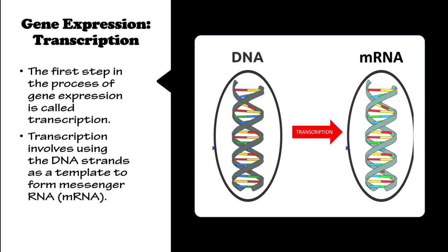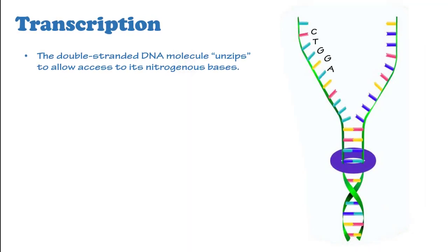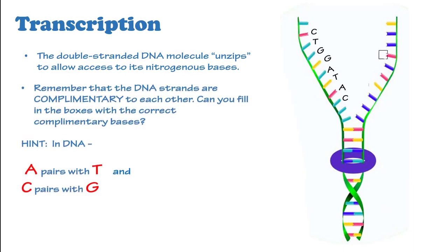The first step in the process of gene expression is transcription. Transcription involves using the DNA strand as a template to form messenger RNA, or mRNA. The double-stranded DNA molecule unzips to allow access to its nitrogenous bases. Remember that DNA strands are complementary to each other. Can you fill in the boxes with the correct complementary bases? In DNA, A pairs with T and C pairs with G. You can pause the video if you want to give it a try.